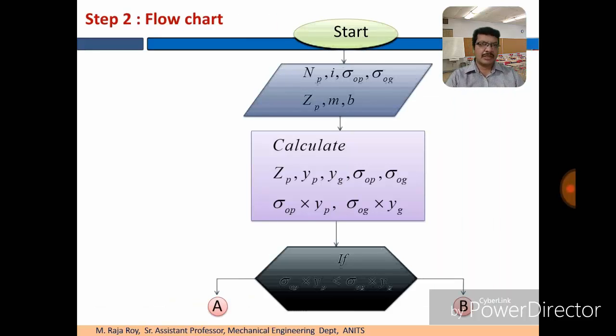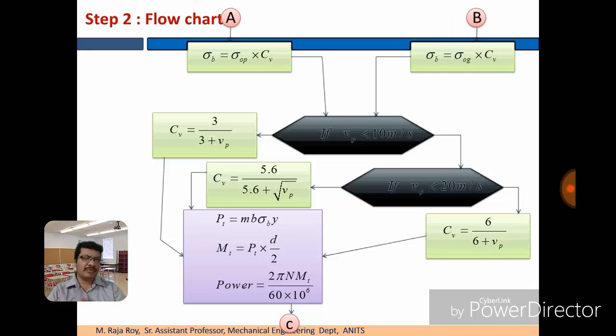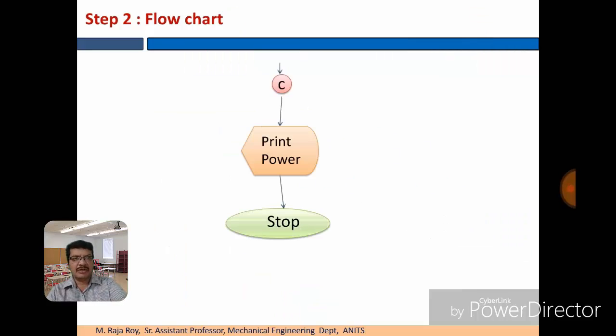Now represent this in the form of flowchart as shown here. Here we are checking the condition. If sigma op into Yp is less than, then you have to go towards that A. Otherwise you have to go towards B. Velocity is less than 10 meters per second, we have one condition. Otherwise we have another condition. These conditions also you can check. Then you can get Pt, then mt and after that power. This is the flowchart. Then you can stop.